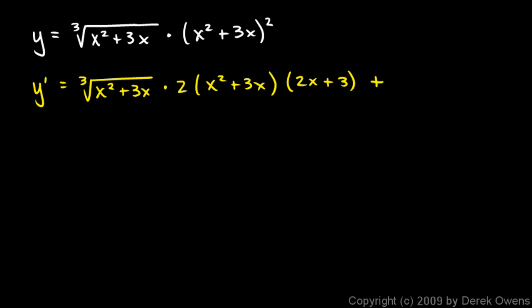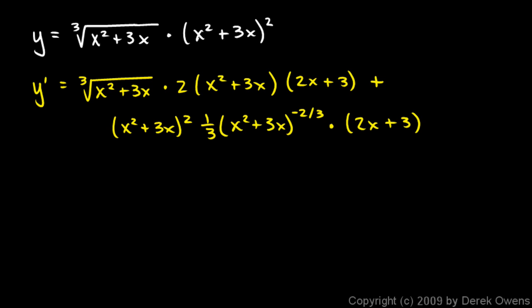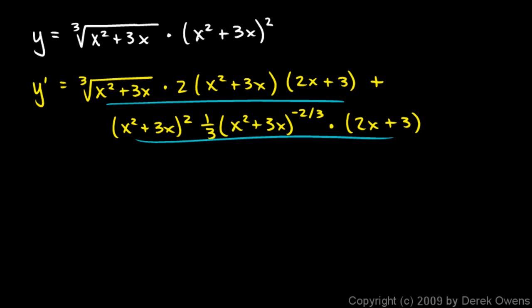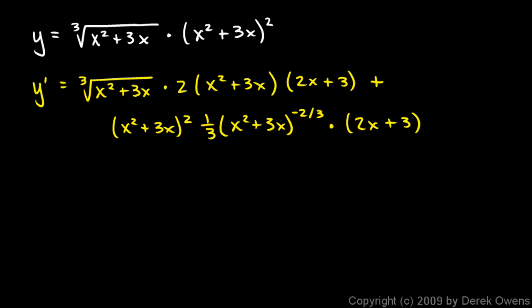Now we do plus the second times the derivative of the first. The second is x squared plus 3x squared. I think of the first function as x squared plus 3x to the power of 1 third, so the derivative is 1 third times x squared plus 3x to the negative 2 thirds, times the derivative of the inner function, which is 2x plus 3. If this were an AP exam question, the answers would likely be in simplified form, not this expanded form.